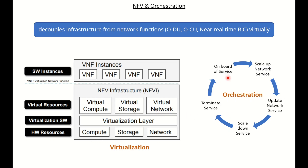Orchestration manages all the different functions as well as the resources in the underlying infrastructure. If you want to initiate a new service — say, incorporating 5G or Open RAN into a telecom infrastructure — that is done by orchestration. It can also scale up or scale down network services, update services depending on requirements, and terminate services when no longer needed, freeing the underlying infrastructure for other uses. This plays a vital role in making the network more efficient.